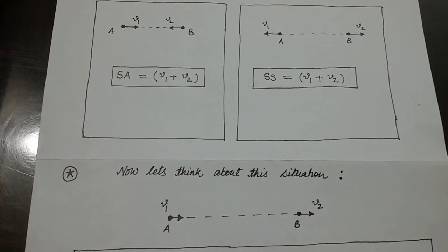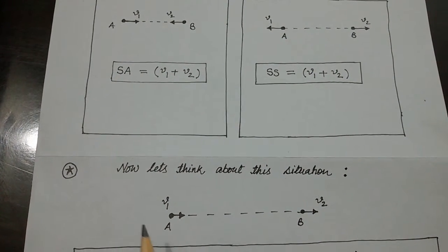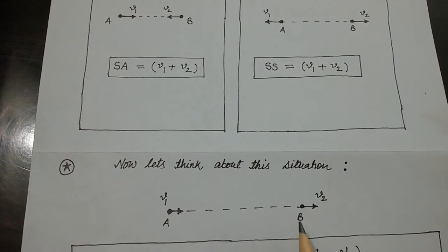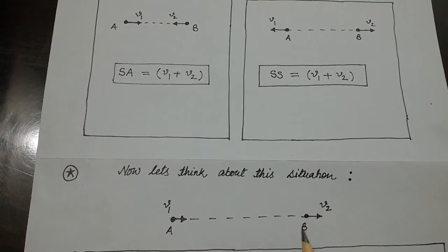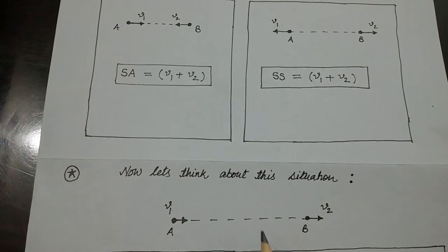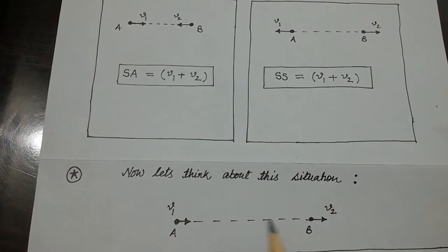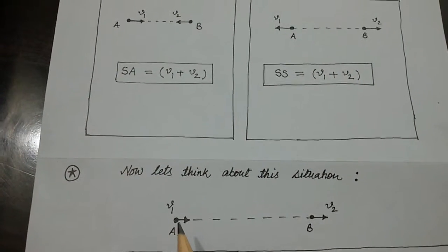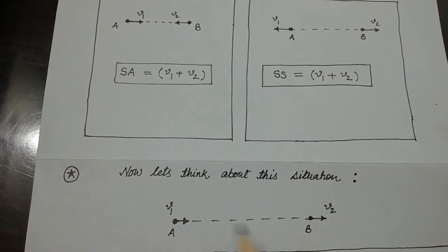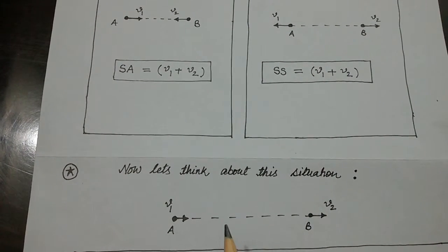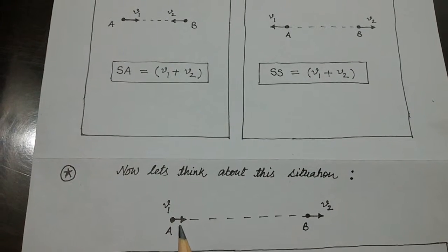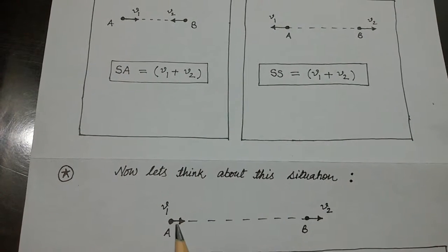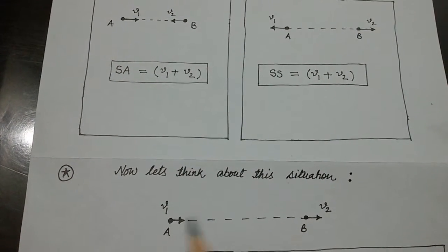Now let us focus on this situation. This particle has velocity V1 and this particle has velocity V2 in the same direction. In this case, it depends on the magnitude of V1 and V2 — which one dominates. If V1 dominates over V2, then these two particles will be approaching each other, and we can declare that speed of approach is V1 minus V2.